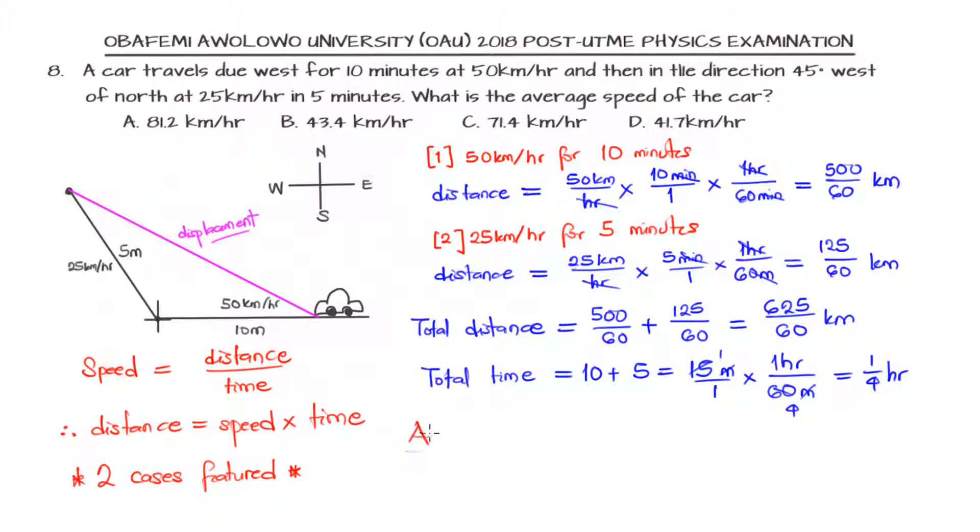We can now say that from here we can find the average speed. The average speed of the car will be the total distance divided by the total time, as we have noted before. So that will be the distance, which is 625 over 60, divided by the time, which is 1 over 4 hour. We are to just appropriately evaluate that: 625 over 60 times 4 over 1. What can go here? 15.